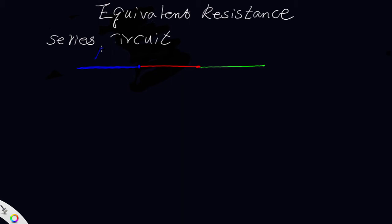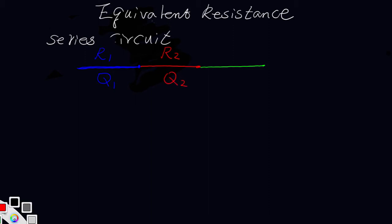Airway 1 has a resistance of R1 and the quantity flowing in airway 1 is Q1. In airway 2 the resistance is R2 and the quantity is Q2. And airway 3 has resistance R3 and quantity Q3.